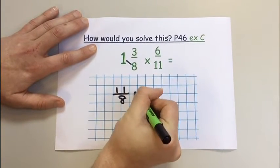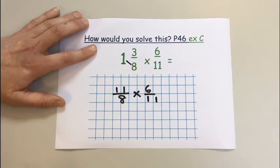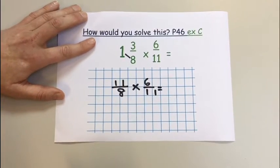I'll move my proper fraction down, 6 over 11. Now we repeat the process that we've been looking at for multiplying fractions in other videos.